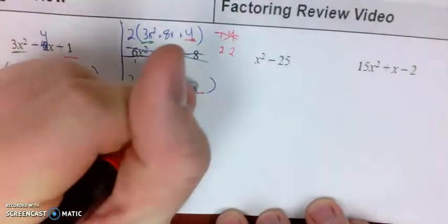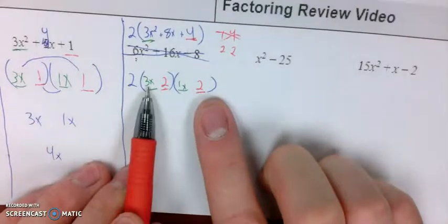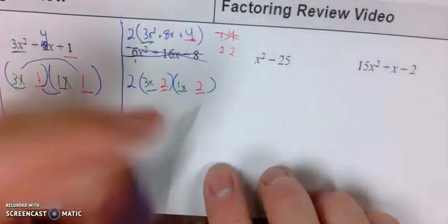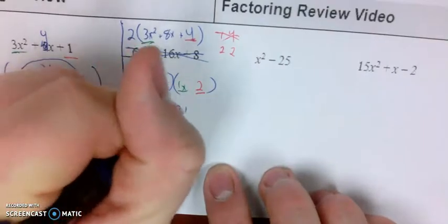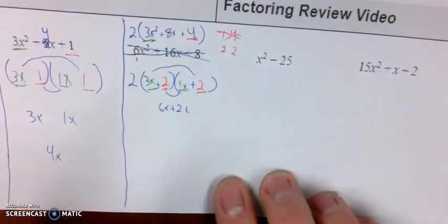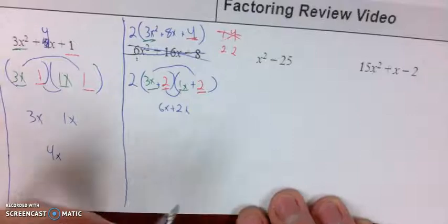So it's got to be 2 and 2. Since they're both the same number, it doesn't really matter which one goes where. I'd have 3x times 2, that's 6x, and 2 times 1x is 2x. So 6x and 2x. If they're both positive, that'll give us that positive 8x in the middle. So this would be our final factored answer.